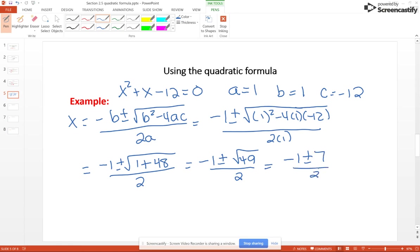Once the radical goes away, you pretty much have to at this point break this up into 2 problems. Negative 1 minus 7 over 2, which is negative 8 over 2, which is negative 4. And don't forget to go back and do the other one: negative 1 plus 7 over 2, which is 6 over 2, which is 3.